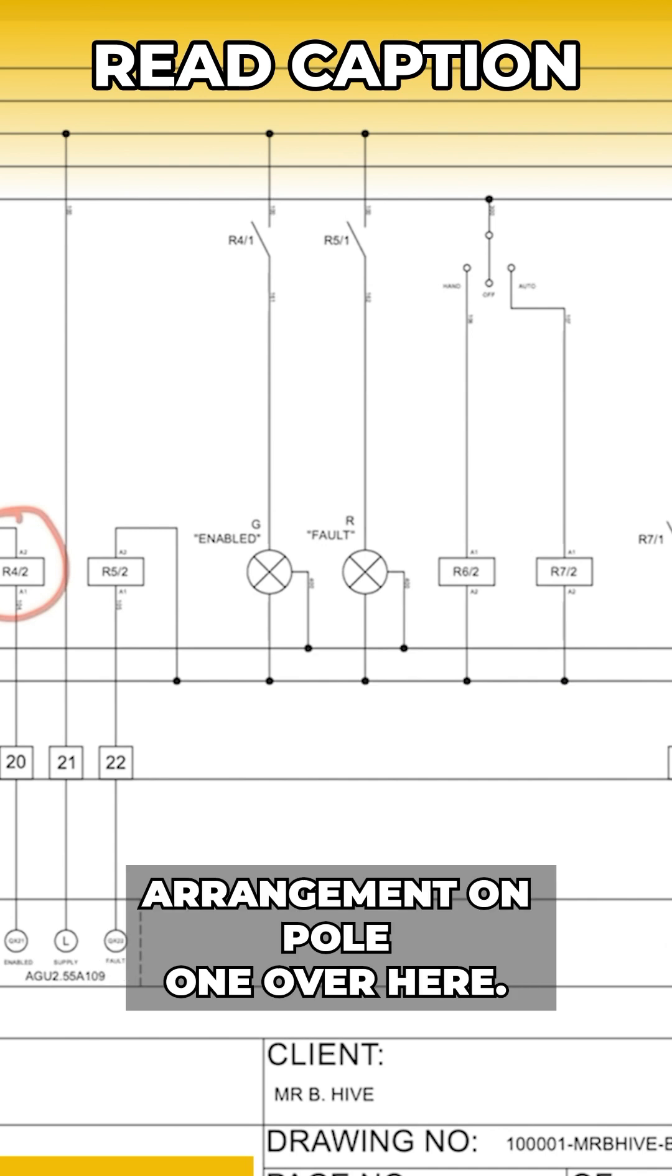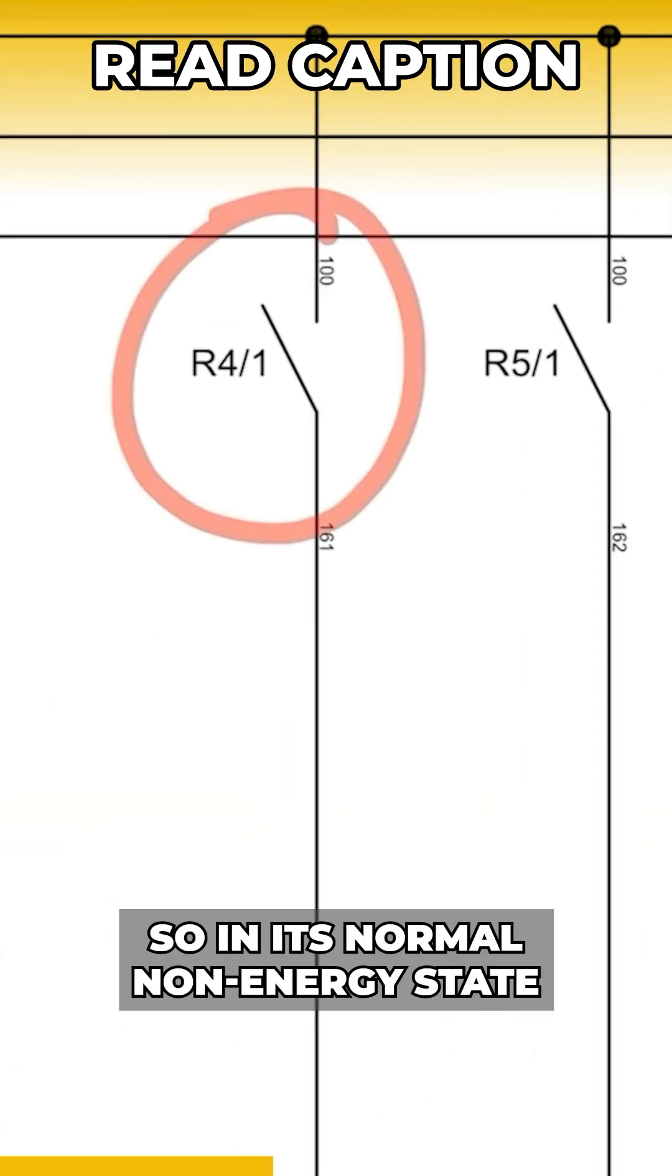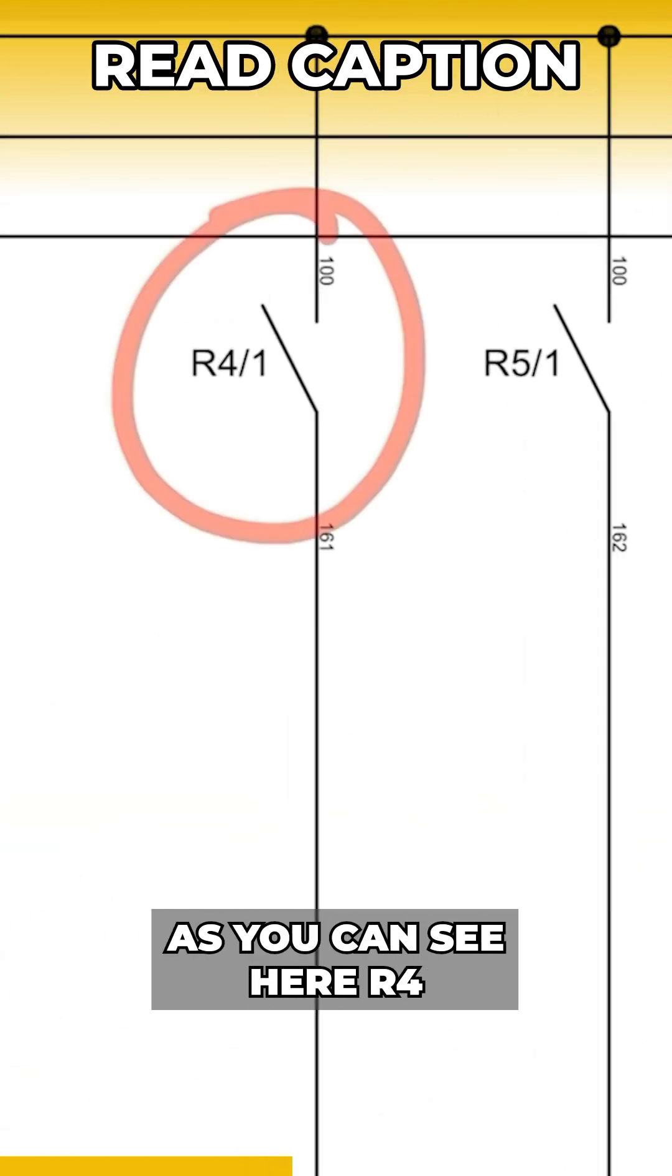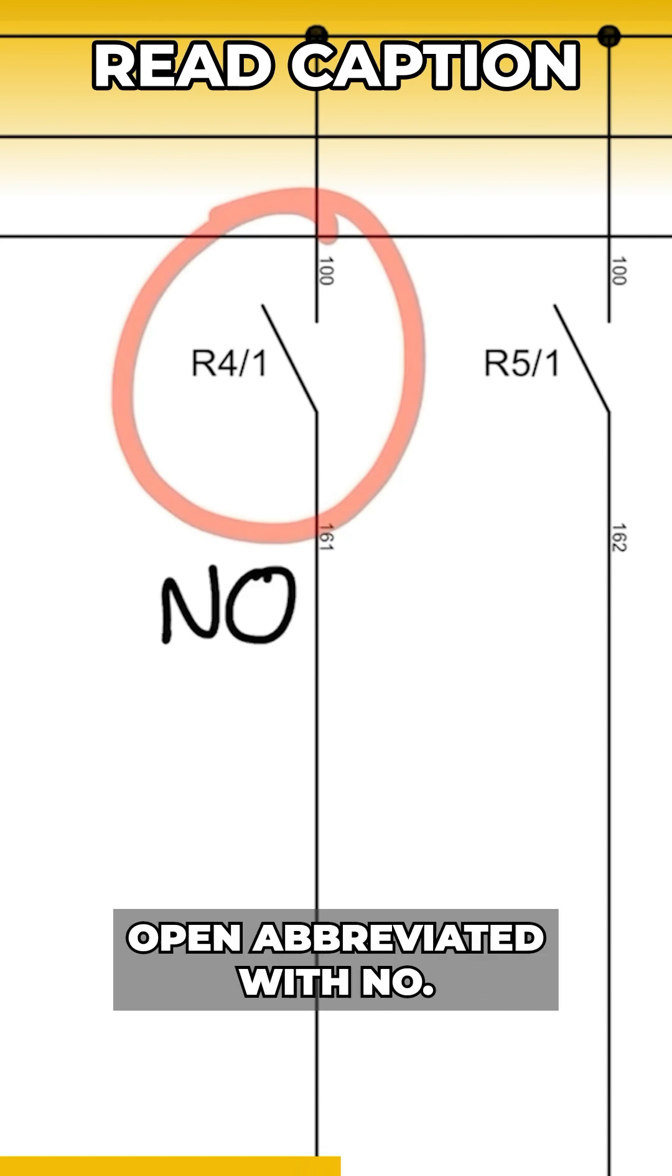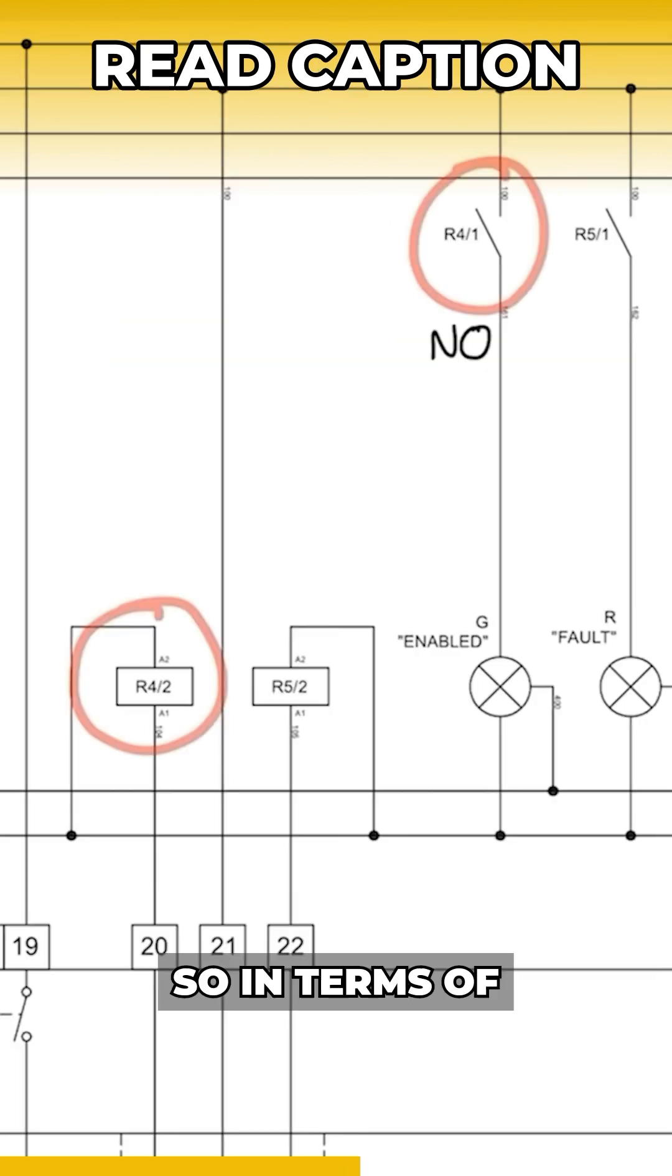Now let's look at the contact arrangement on pole one over here. So in this normal non-energized state, as you can see here, R4/1 is open. So this means that this is normally open, abbreviated with NO.